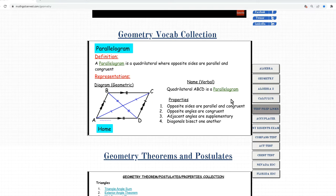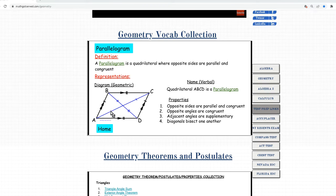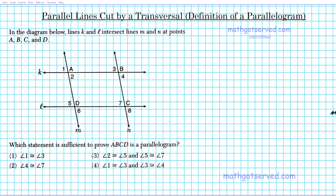In this particular example we're going to focus our attention on the parallel orientation of the lines, because we're not given any measures. Looking at our parallelogram, AB is parallel to CD and BC is parallel to AD. So if you have any quadrilateral where opposite sides are parallel, that quadrilateral is automatically a parallelogram. Our plan is to prove that quadrilateral ABCD is a parallelogram.